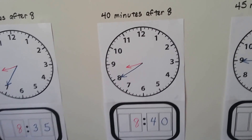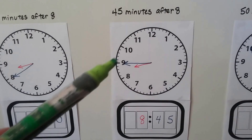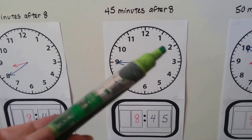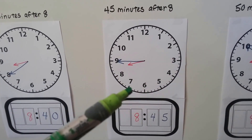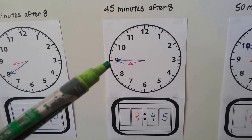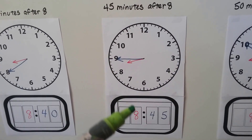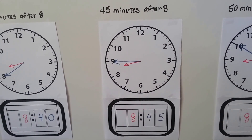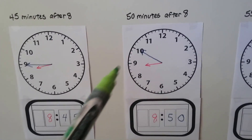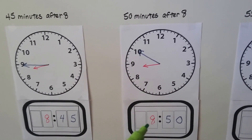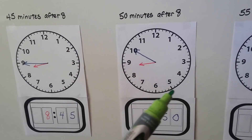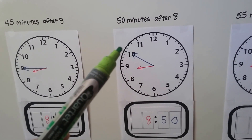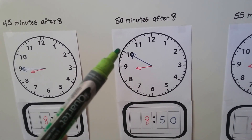When the minute hand is pointing to the nine, that's 45 minutes after eight — 5, 10, 15, 20, 25, 30, 35, 40, 45. It's 8:45 on a digital clock. When the minute hand is pointing to the 10, it's 8:50 — 5, 10, 15, 20, 25, 30, 35, 40, 45, 50. That's 50 minutes after eight.